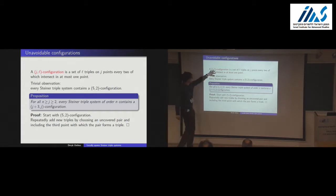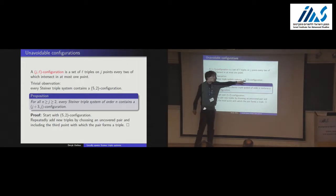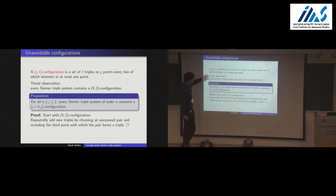What kind of configurations can we expect and which ones can we forbid? Starting with the simplest: any Steiner triple system contains a 5-2 configuration. Take any point — it lives in several triples. Take two of them: that's five points and two triples. This is something we can't avoid.